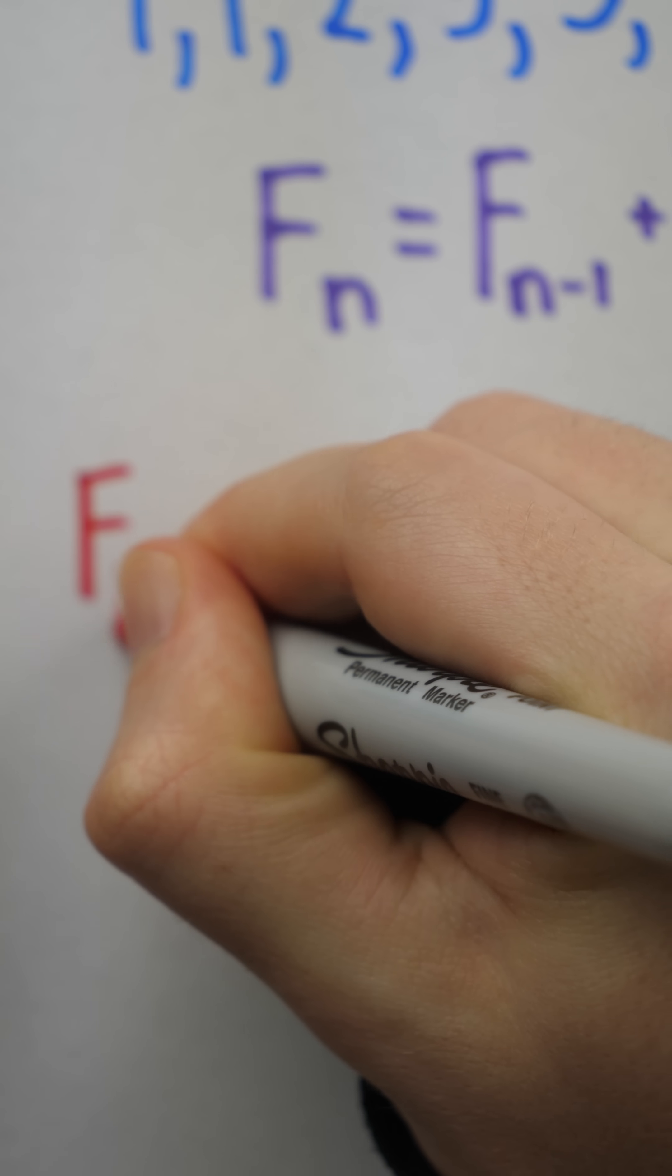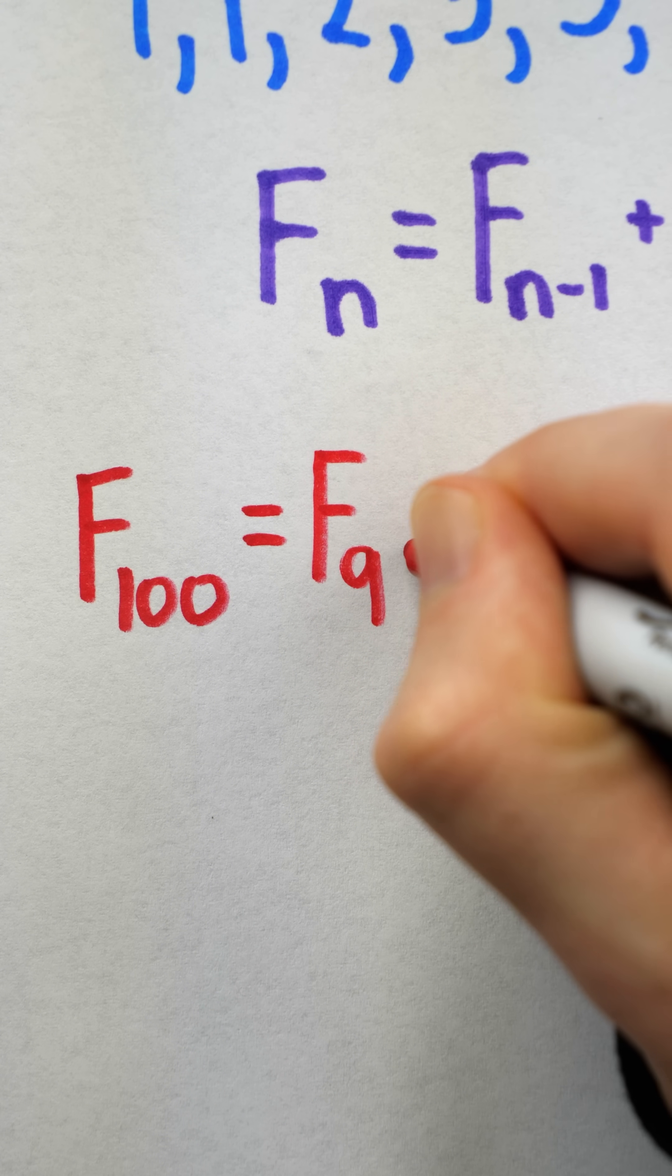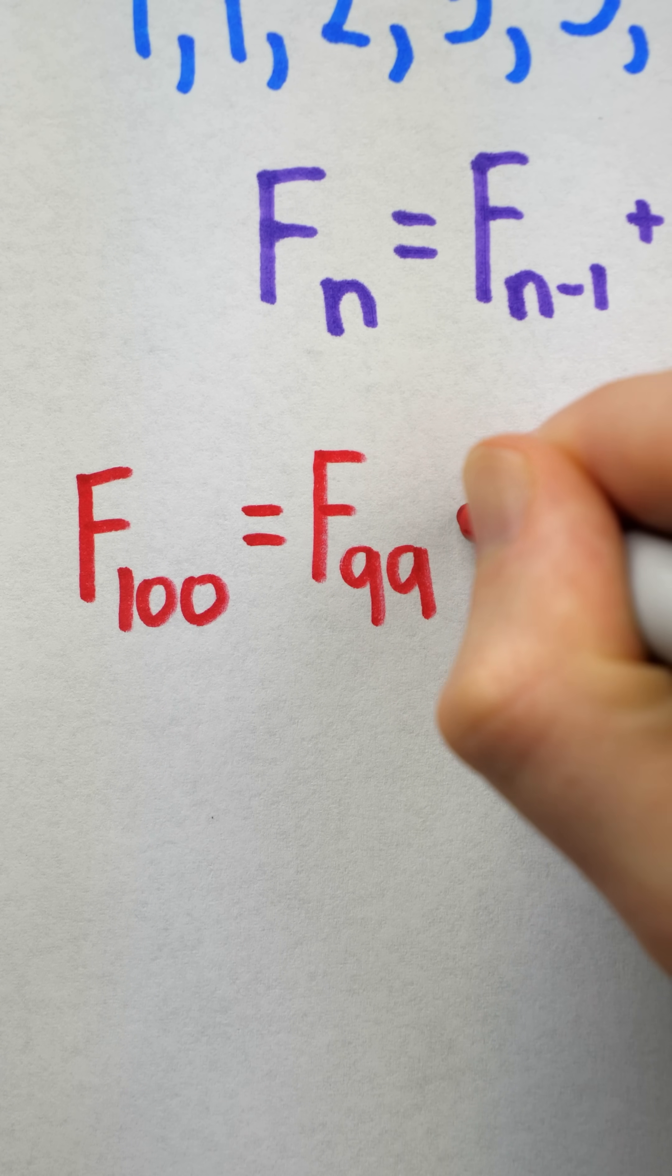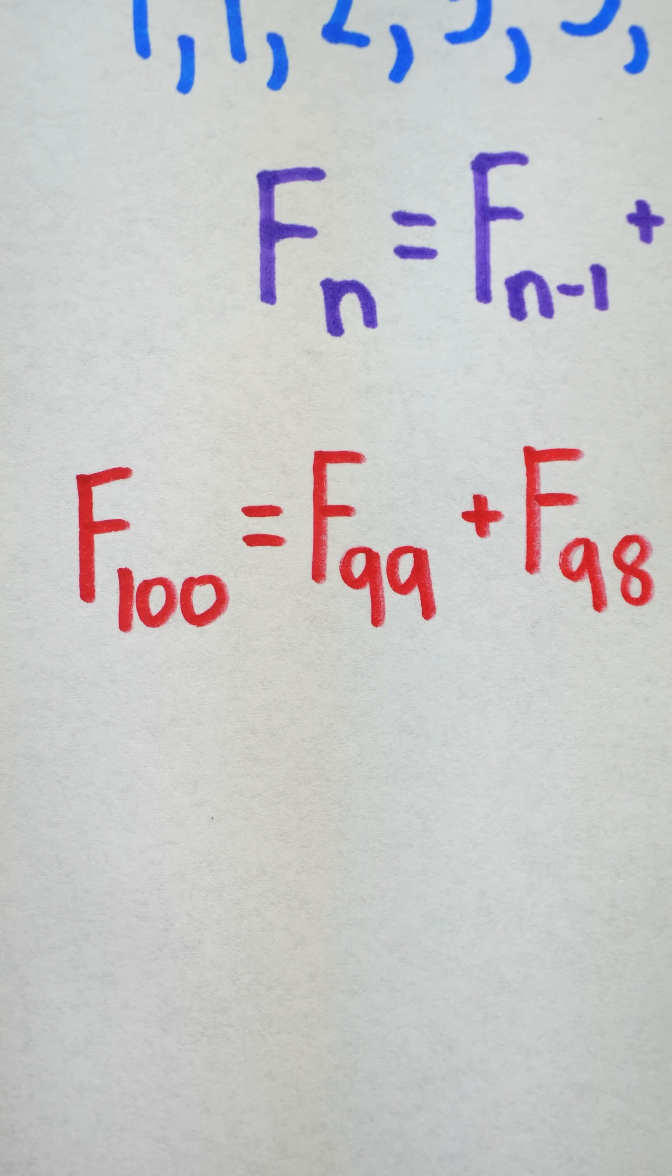So how do we find something like F100? Well, it would seem we need to add F99 and F98, which requires us to add up all of the preceding terms, which is a ton of work.